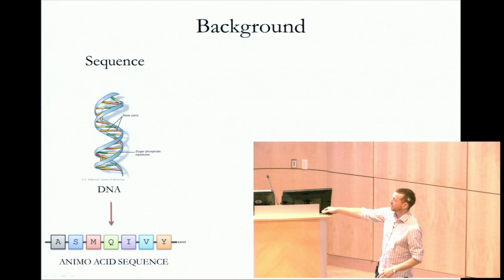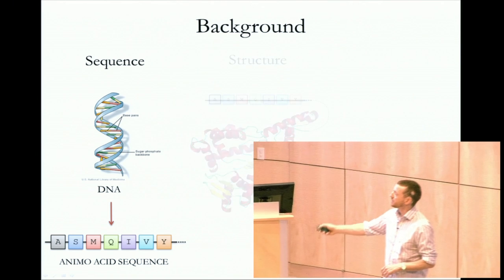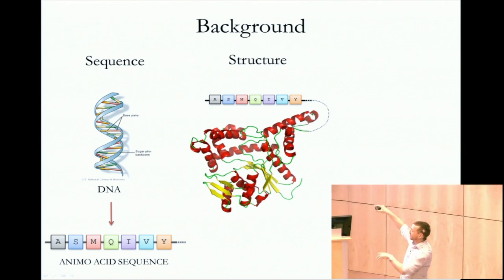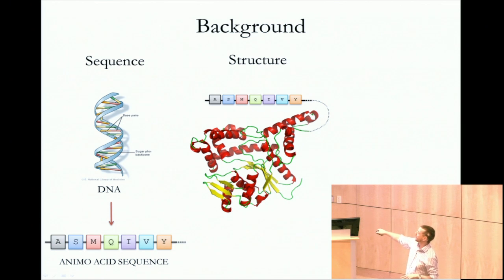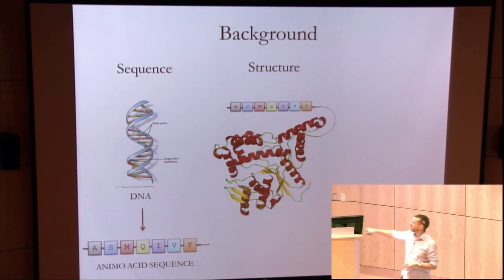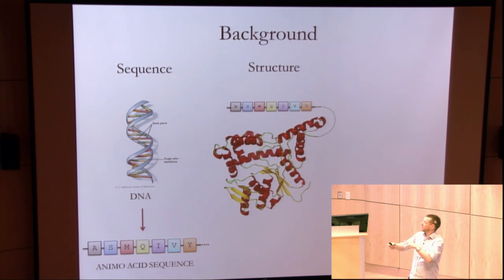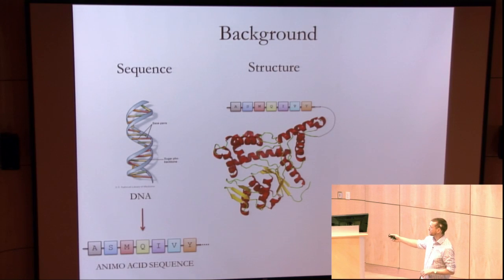We get our amino acid sequence, which is a linear string of amino acids. With this linear string, we find that it folds up into secondary structures — alpha helices in red and beta strands in yellow. These secondary structures then fold on themselves to form a compact globular structure. This is our protein structure.